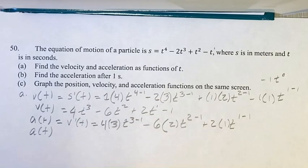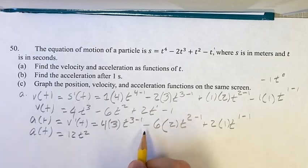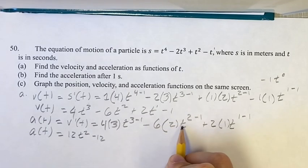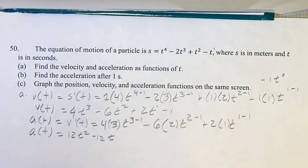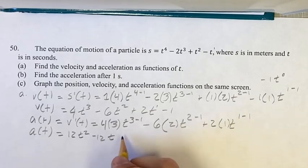And simplifying the acceleration, we get four times three is twelve, t to the three minus one is t squared, minus twelve, t to the two minus one is t, plus two, times t to the zero is plus two.